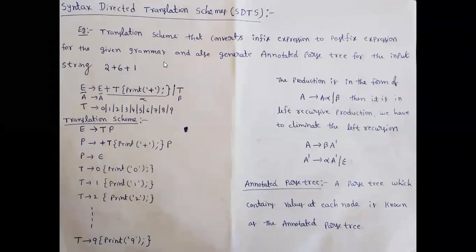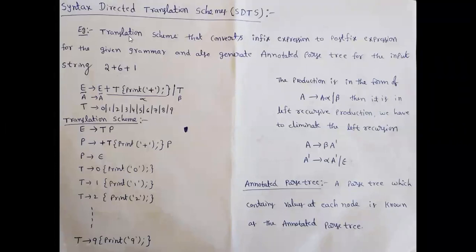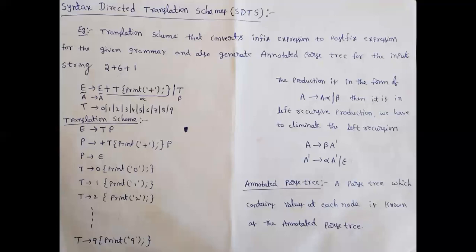Here is an example translation scheme that converts an infix expression to a postfix expression for the given grammar, and also generates the annotated parse tree for the input string two plus six plus one. An annotated parse tree is a parse tree which contains values at each node. We are using the translation scheme to convert the infix expression to a postfix expression.